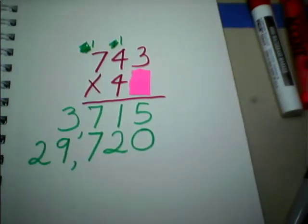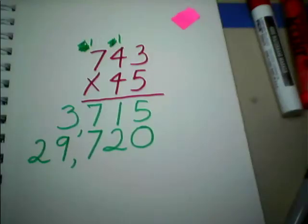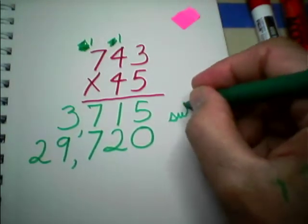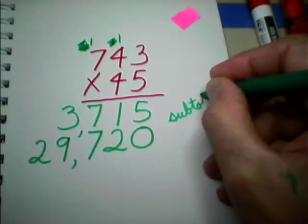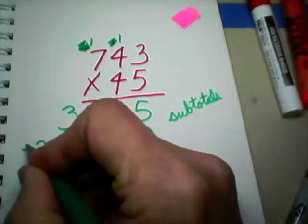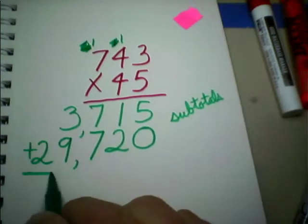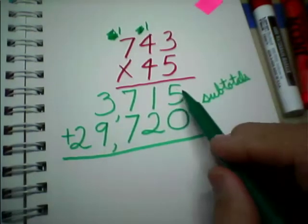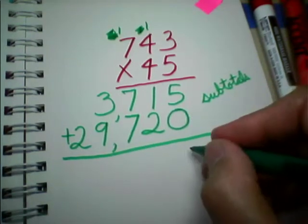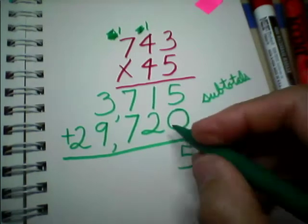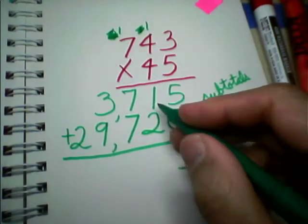So, what do we do to find the answer to 743 times 45? Well, we just take our, what do we call these again? Subtotals, and we add them. We're out of multiplication land, and we're into addition land. So, 5 plus 0 is 5. Nothing to carry. 1 plus 2 is 3.